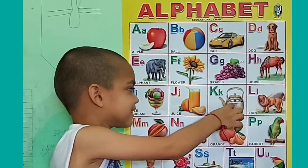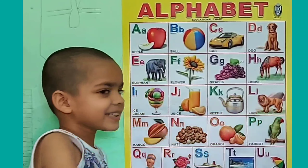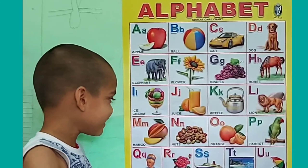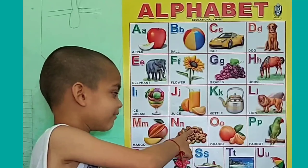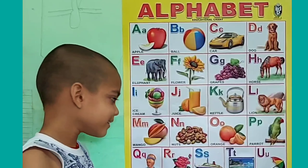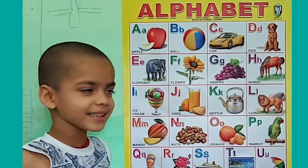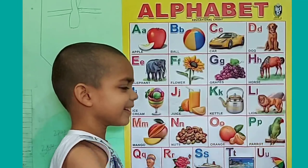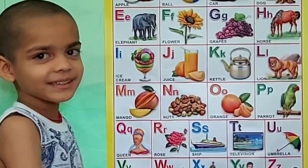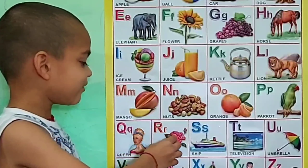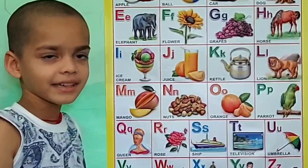K for kettle, L for lion, M for mango, N for nuts, O for orange, C for parrot, Q for queen, R for rose, S for sheep.